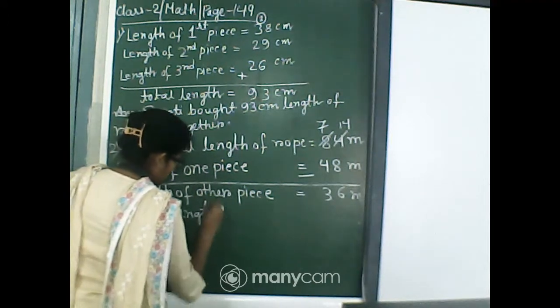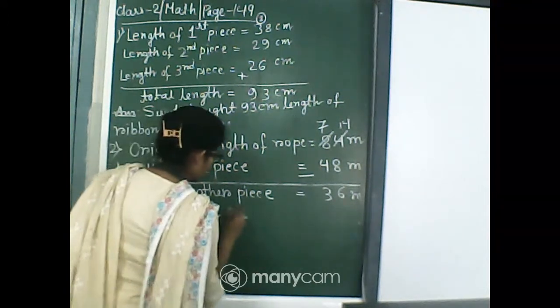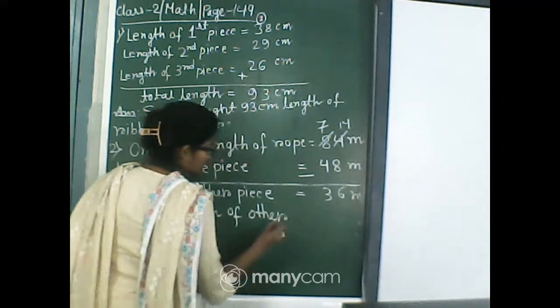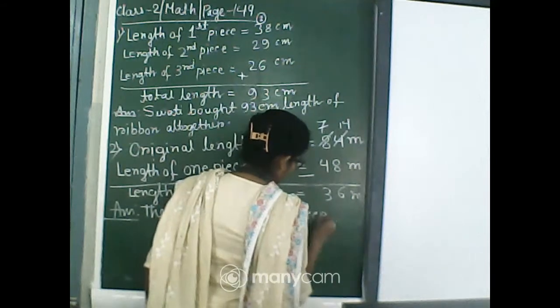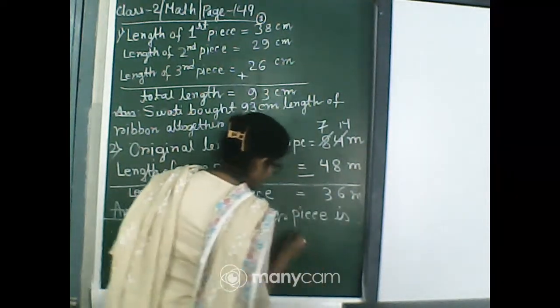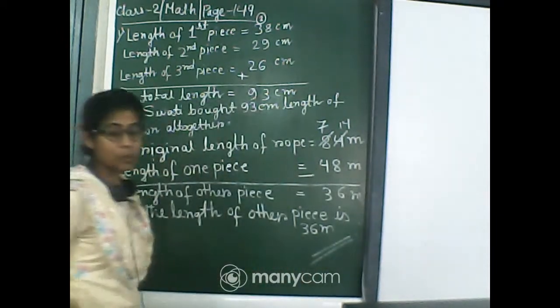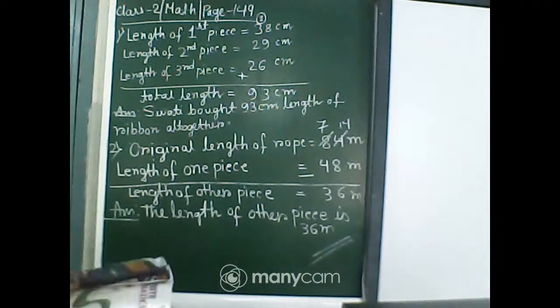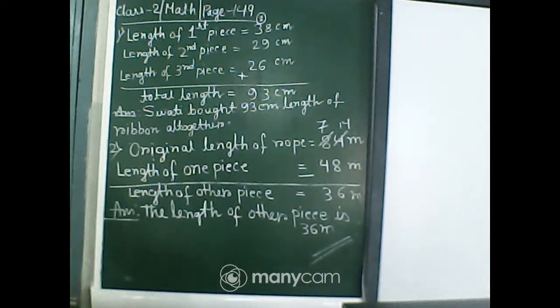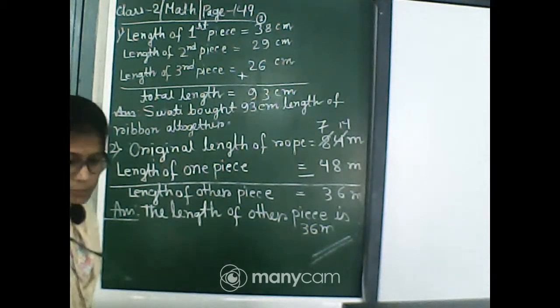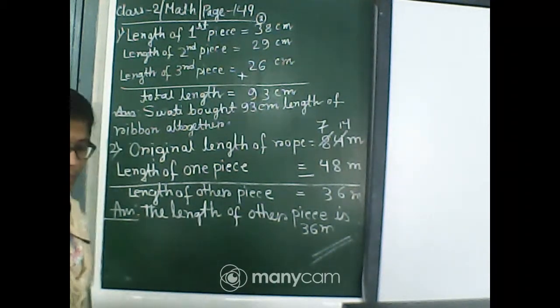The length of the other piece is 36 meter. Okay, so try to practice the story sums from this chapter. Today we will do up to this much. Bye bye all of you.